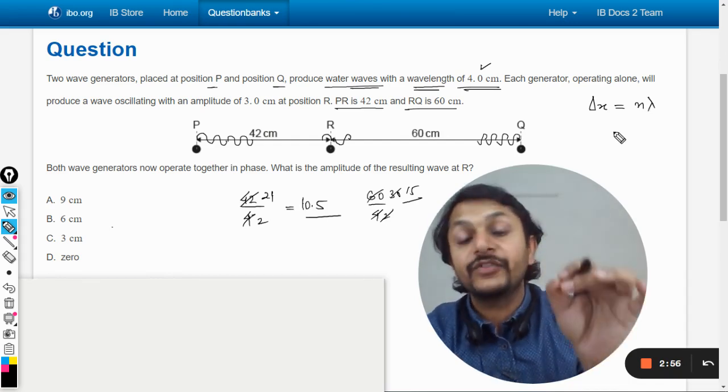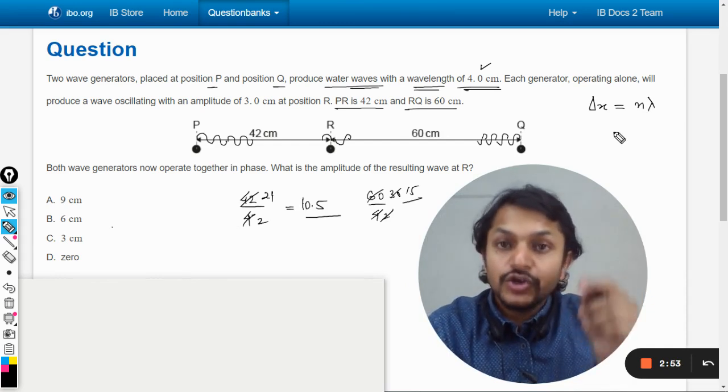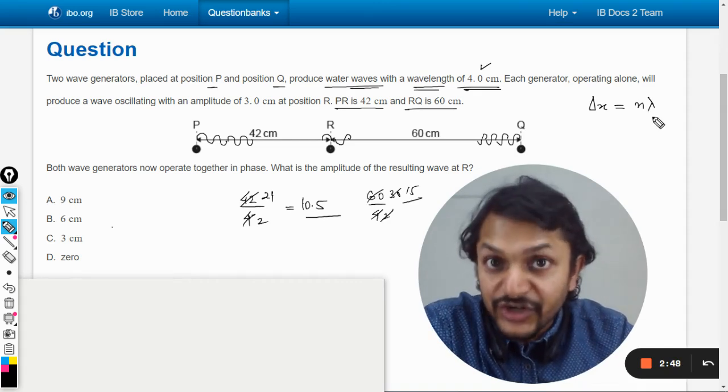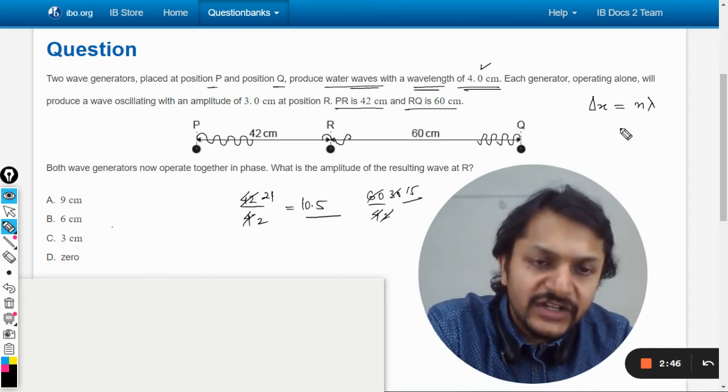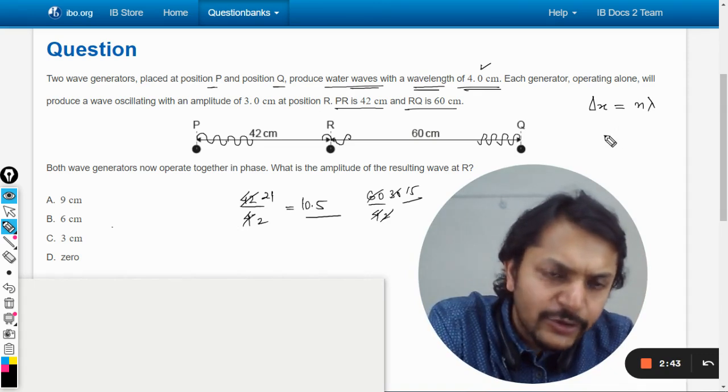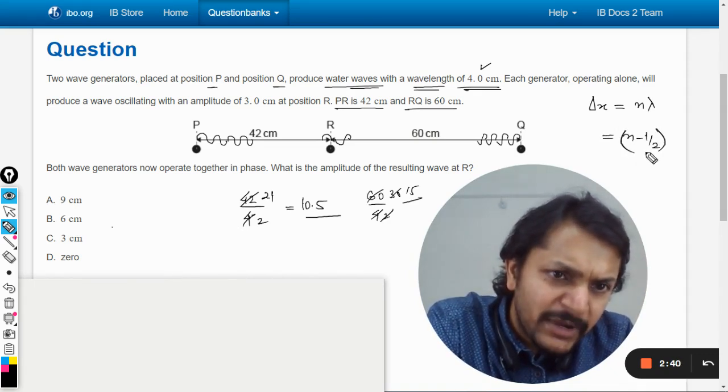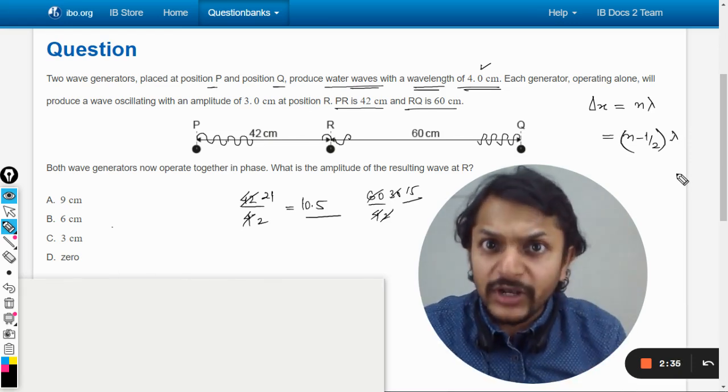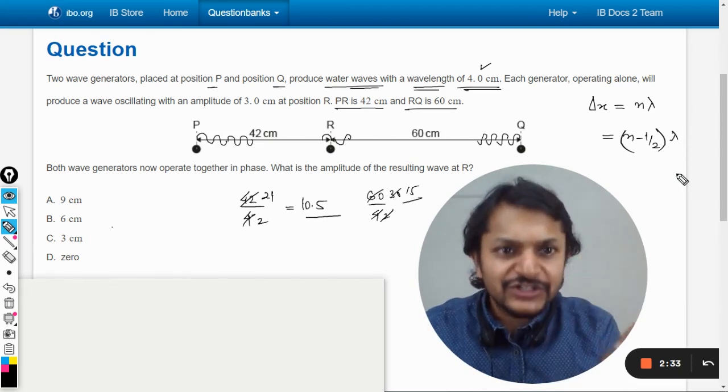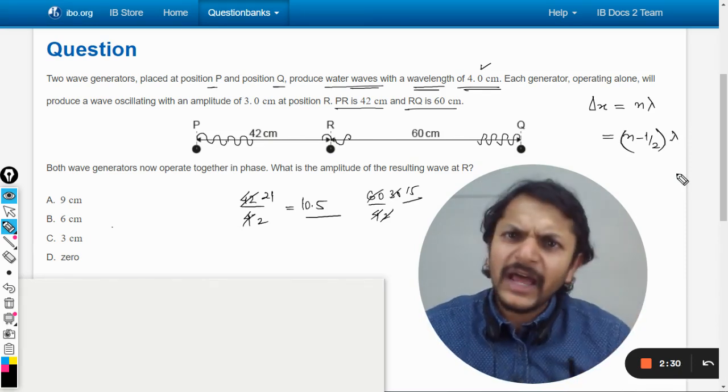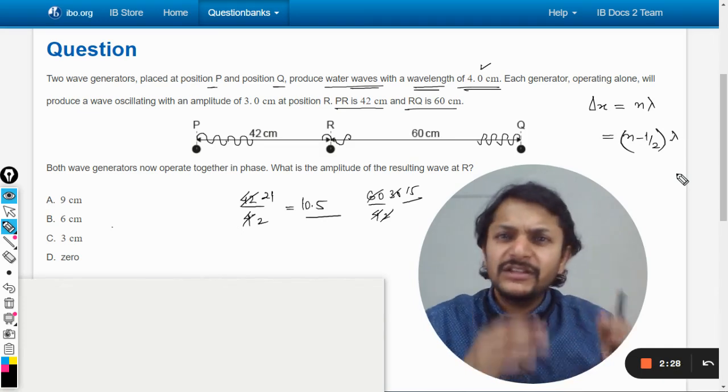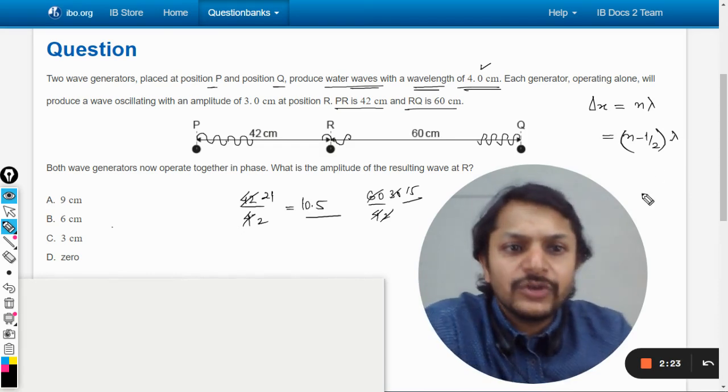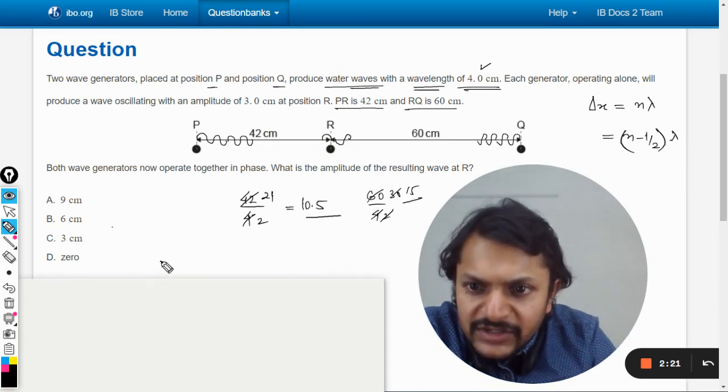That is for constructive interference. For destructive interference it is (n - 1/2) into lambda. I know that in the data booklet the formula given is n plus half, but I take it as minus half because there is a discrepancy I have discussed many times in the playlist.